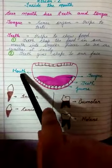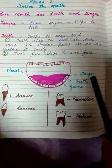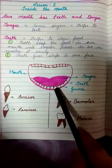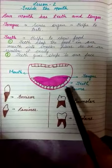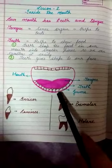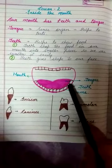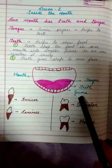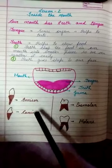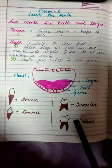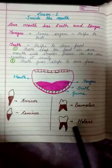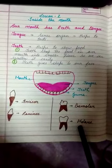This is a diagram of mouth. It consists of tongue, teeth and gums. Gums, jo ki teeth ke neeche ki taraf hote hai, jinhe hum masoodey kehte hai. These are four types of teeth, we will study it later on. Lekin maine ek diagram bana diya hai aapko samjhane ke liye.